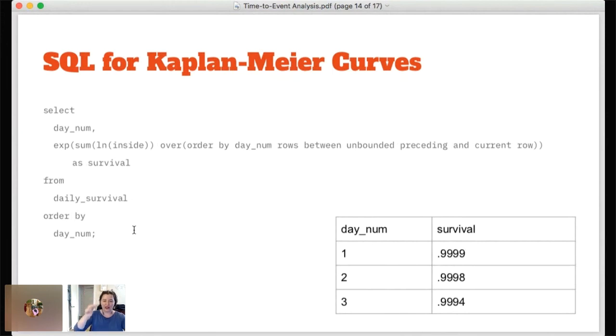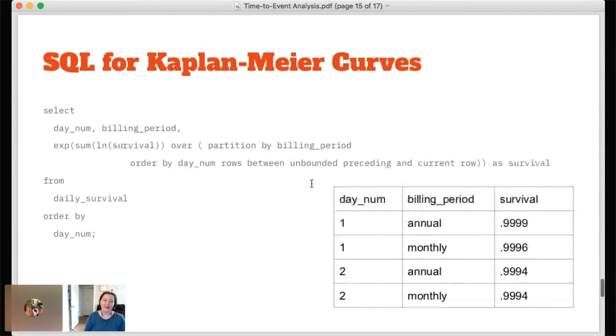So now I've got a table that's just one comma one minus di over ni and all I want to pull it together and get that product function. So I get to use a summation as a window function. So I take the exponential of the sum of the log of the inside, the one minus di over ni and I take it over unbounded preceding and current row. So that takes all of the previous rows and adds them up up to the current row so that for every ti you have t1 by itself and then t1 minus t2 and then t1 minus t2 minus t3 and so on. And then this gives you a table that just has the day number and then the proportion that survive for each time.